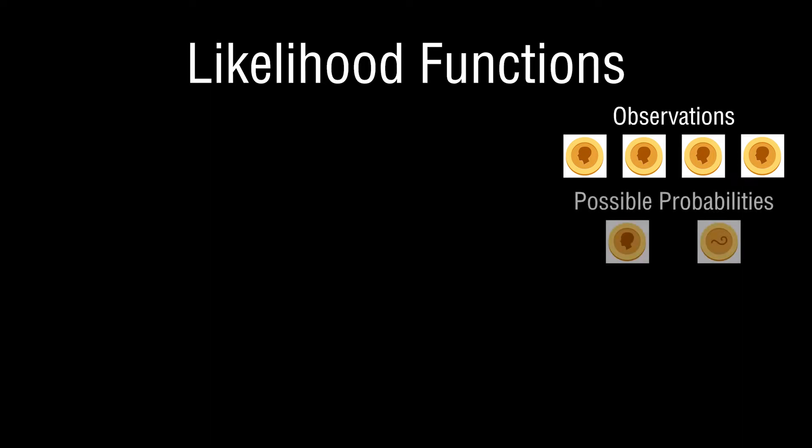Now that we understand how you might come up with the answer of one in sixteen, let's introduce the concept of a likelihood function. The observations are fixed — you've observed that the coin has been tossed four times and four heads have shown up. We said earlier the chance of this was one in sixteen, assuming a 50% probability of heads, but let's consider that all you really know are the four outcomes.